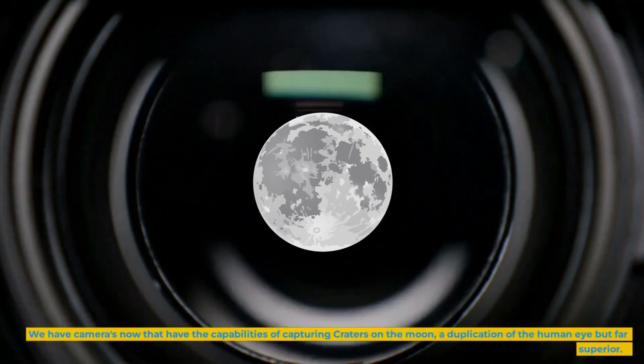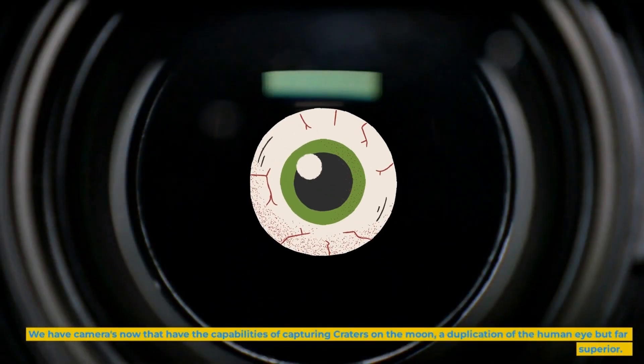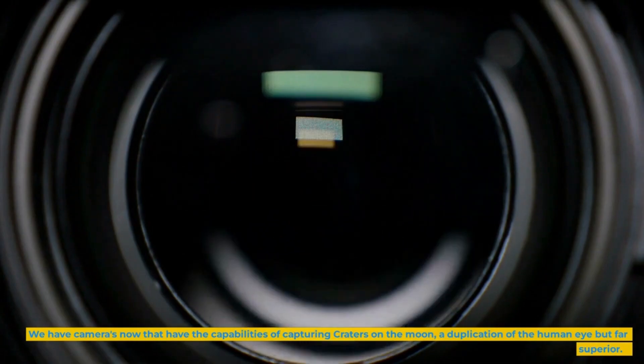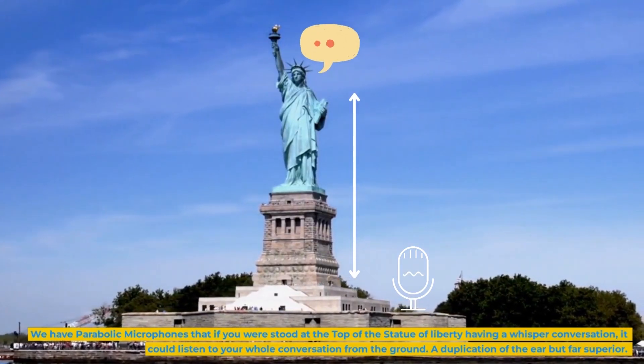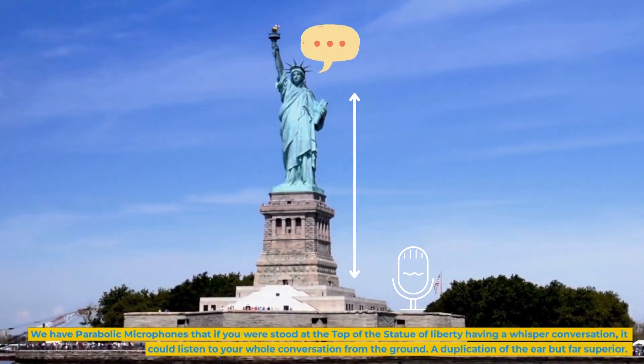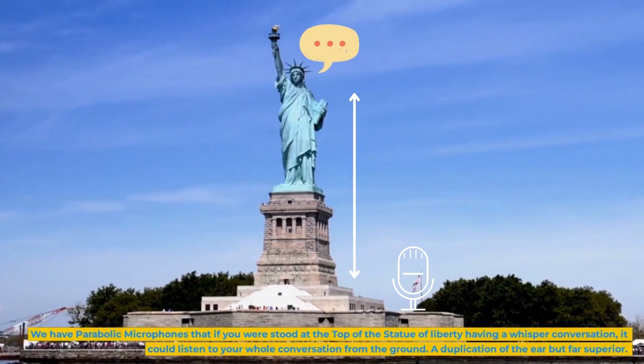We have cameras now that have the capabilities of capturing craters on the moon, a duplication of the human eye but far superior. We have parabolic microphones that if you were stood at the top of the Statue of Liberty having a whisper conversation, it could listen to your whole conversation from the ground. A duplication of the ear but far superior.